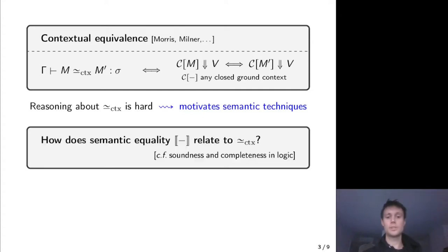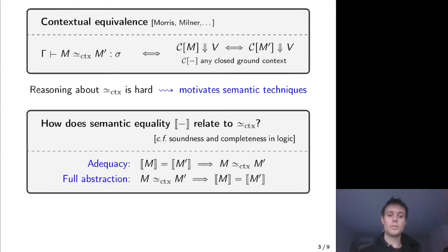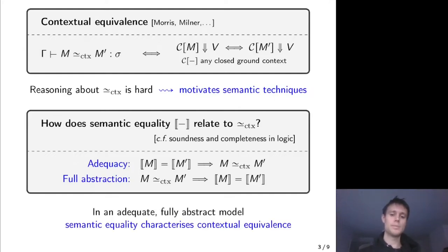To this end, we're interested in the extent to which semantic equality in some model relates to contextual equivalence, for example, in the same way that we're interested in soundness and completeness in logic. The corresponding properties are called adequacy and full abstraction, and the reason we're interested in adequate and fully abstract models is because in such models, semantic equality completely characterizes contextual equivalence.